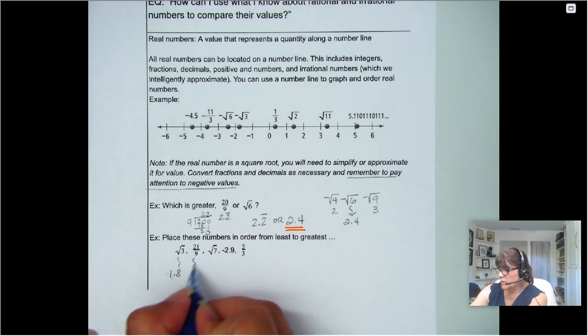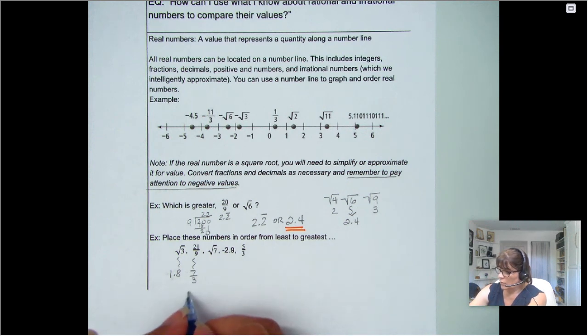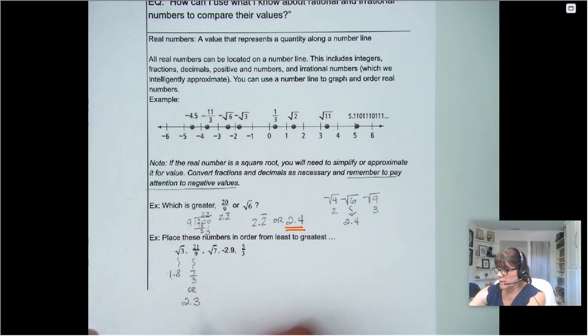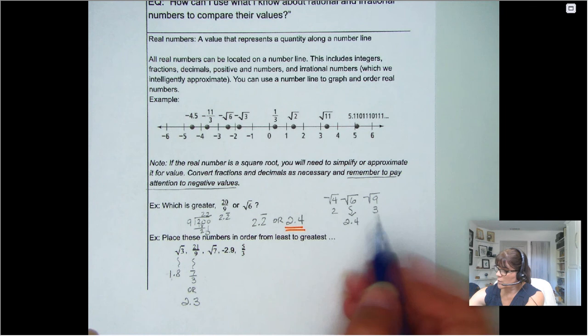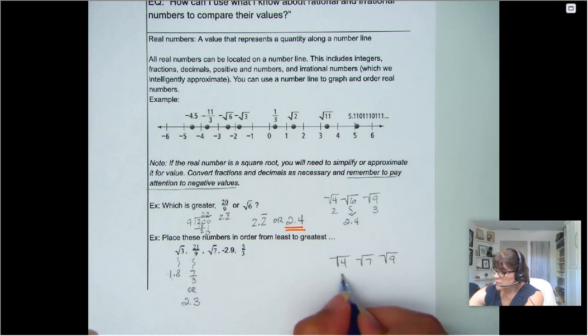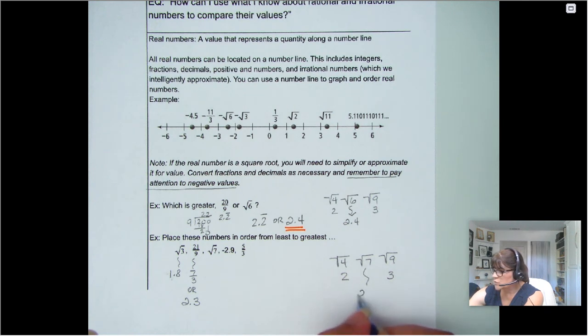21 ninths. Well, it could also be written as 7 thirds, or 2 and 1 third, which is 2.3. The square root of 7. That's going to follow this up here pretty well. The square root of 7 is going to be between the square root of 9 and the square root of 4. So between 2 and 3, a little closer, so maybe we'll say 2.6.